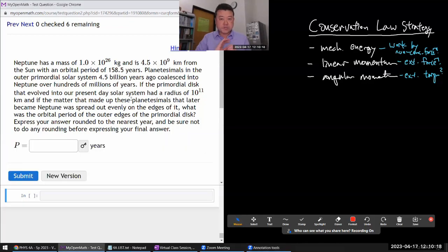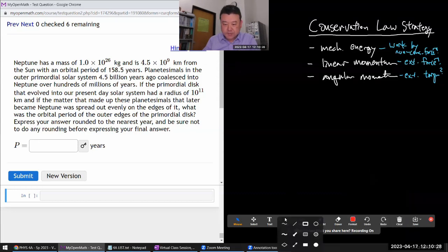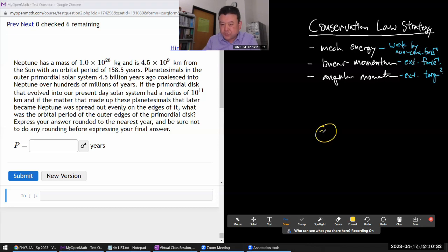Okay, so this question says Neptune has some mass, it's describing the solar system. Let me just draw the sun. I need to do it all so that I have a sense, like I understand what the question is asking. And Neptune has some kind of an orbit, and it has some mass, and it's at some distance d from the sun.